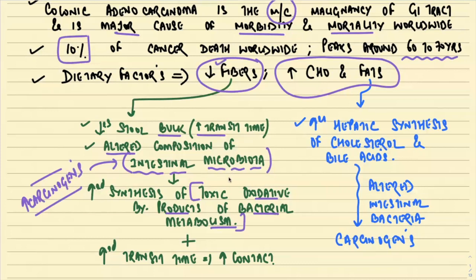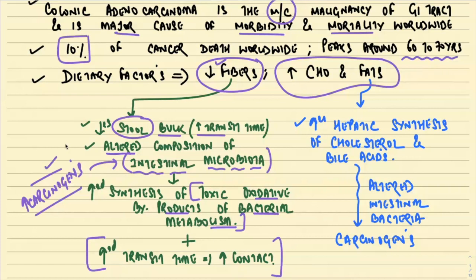The second important point is that decreased fiber means less stool inside the colon. Because that amount is less, the stool stays in contact with the colon longer. Decreased stool bulk increases transit time and allows more interaction between these carcinogens and the colonic epithelial cells. This is how decreased fiber intake predisposes to colorectal carcinoma.